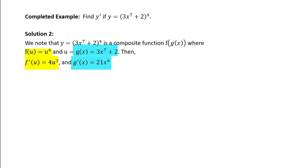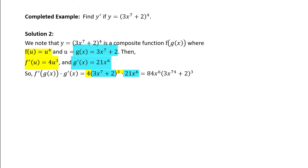And g prime of x: bring the 7 down, 3 times 7 is 21 times x to the 6th. The derivative of 2 is 0. So f prime of g of x times g prime of x equals: we have 4 times something cubed — substituting back in 3x to the 7th plus 2 — times 21x to the 6th. Regrouping: 4 times 21x to the 6th equals 84x to the 6th times the quantity 3x to the 7th plus 2 raised to the 3.